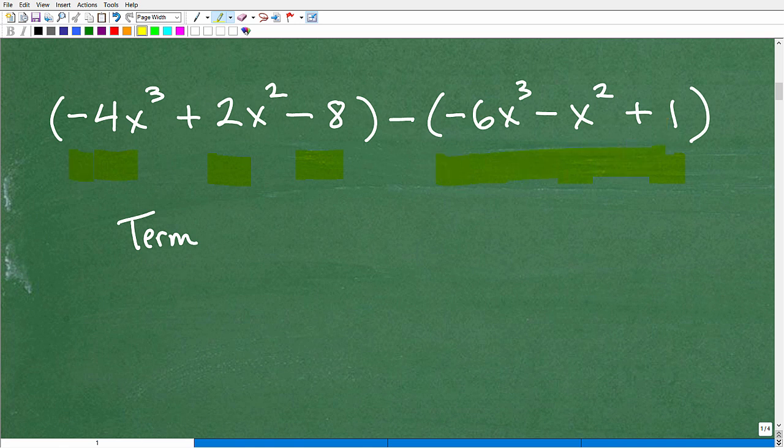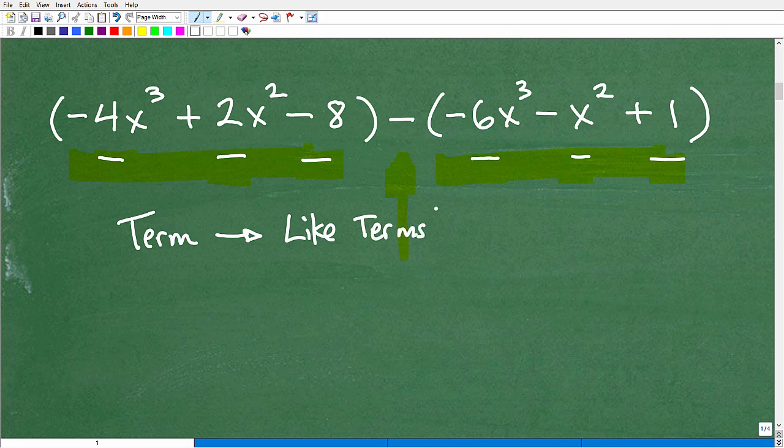You can see we have this polynomial and we're subtracting the two polynomials here because I have that little difference operator. So the big thing is you've got to know that this is a term, that's a term, this is a term, term, term, and term. And you need to understand the concept of like terms. When things are like, we have a polynomial, you have to understand what like terms are. Again, I reference you back to my video on adding polynomials. I'm sure I've done other videos as well, but I really take the time and break it down piece by piece.